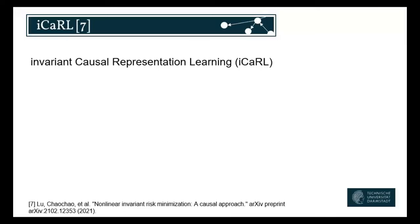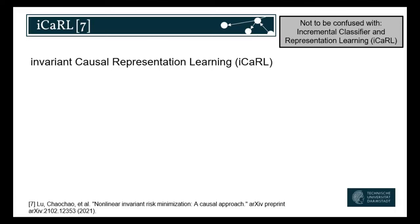Another representation learning method is called invariant causal representation learning, short ICARL. Just to make sure — there's also another method called incremental classifying representation learning, also called ICARL. These are two completely different things. If any of you have seen or will see the continual learning lecture by Martin Mundt, they talk about that ICARL, not this ICARL. Just to avoid any confusion — different things, both representation learning, but very little other similarities.